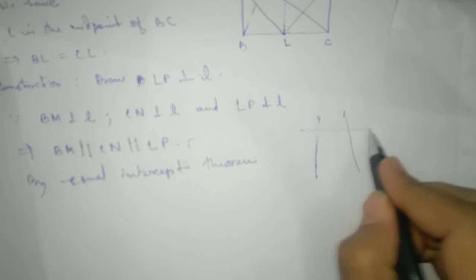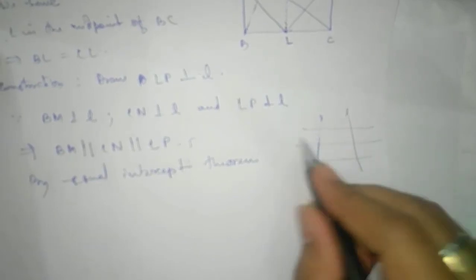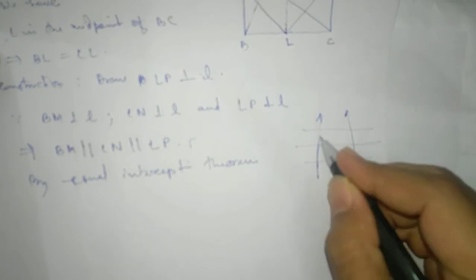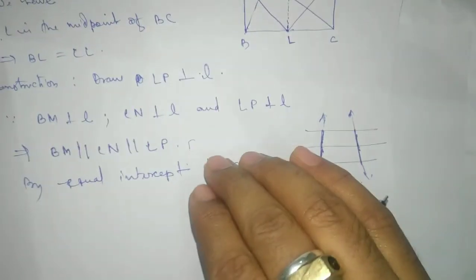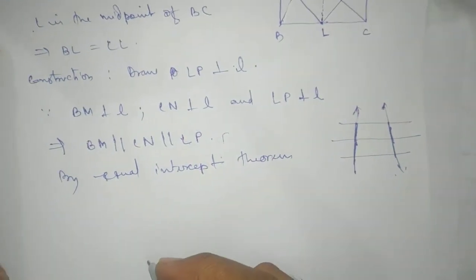That means if we take two parallel lines, or three parallel lines here we are taking, and if these two are transversals, then if this side equal, then this must be equal. Intercept theorem, this is your equal intercept theorem.